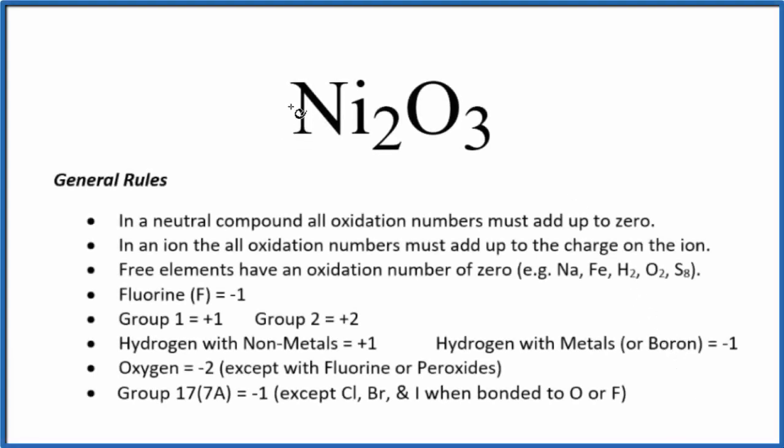To find the oxidation numbers for each element in Ni2O3, nickel (III) oxide, we'll use these rules. First off, we don't have a negative or positive written after the Ni2O3. That's because it's a neutral compound. Because it's neutral, all the oxidation numbers are going to add up to zero.